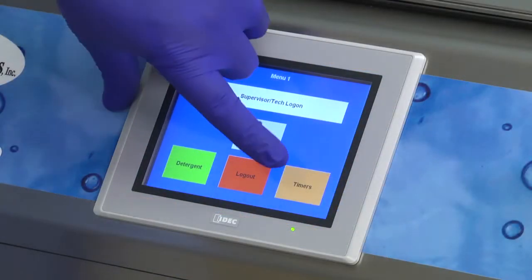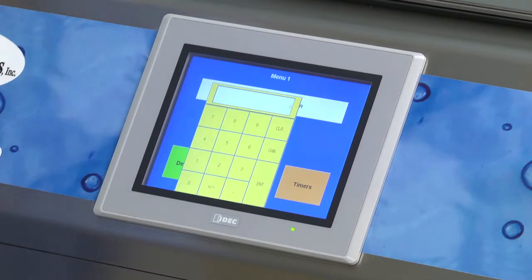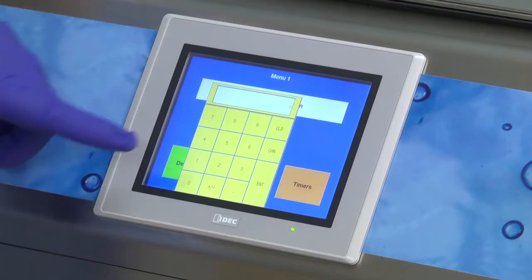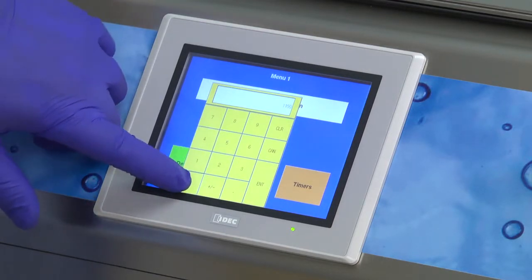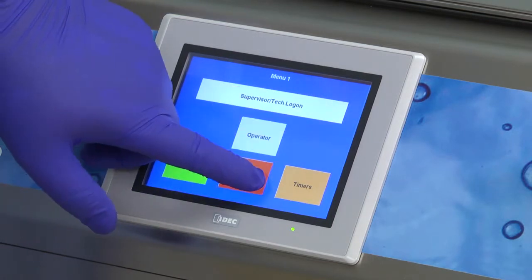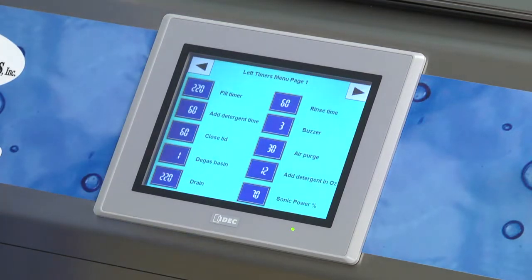To adjust the preset timers, select the timer button from menu one. A number pad will pop up to enter an authorization code. Since this is the model 1150, the authorization code is 1150, followed by the enter button. This gives you access to change the many timers in your machine, as well as other settings. These settings should only be changed by supervisors or technicians.